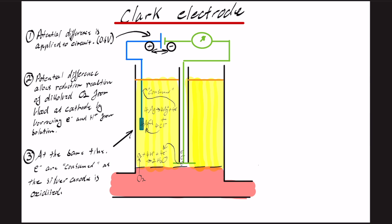So, like I mentioned, just to reiterate the point, in step two, you have a reduction reaction happening at the platinum cathode. And in step three, you have an oxidation reaction happening at the silver anode.